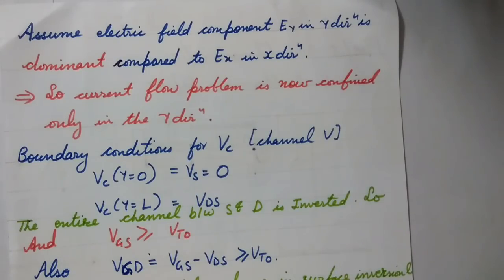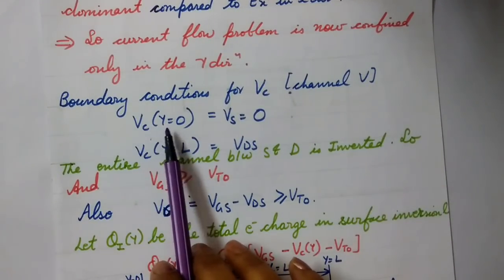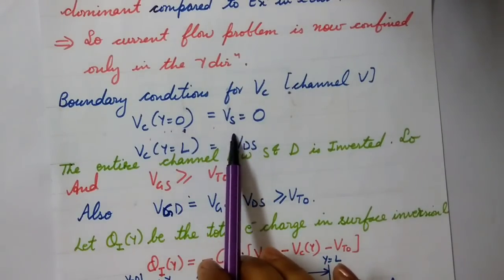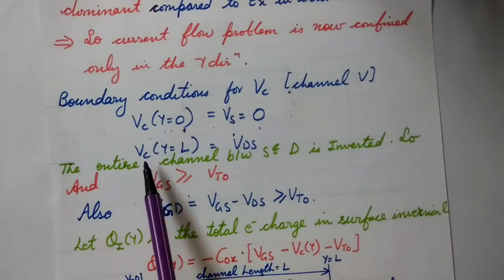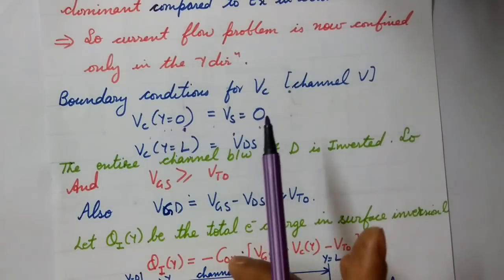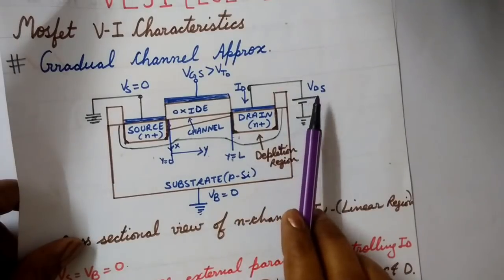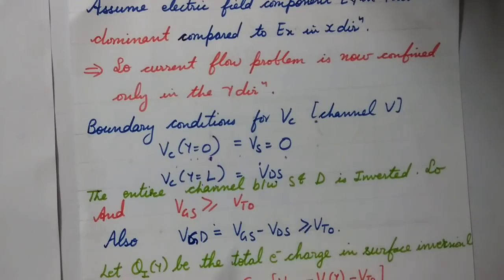With this assumption, the current flow problem is now confined only to the Y direction. The boundary conditions for the channel voltage VCY are: at Y equals 0 (source end), VC equals VS which equals zero since the source is grounded; and at Y equals L (drain end), VC equals VDS, since the voltage at the drain end is VDS.